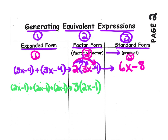We're multiplying 3 against the quantity 2x minus 1. Now we're going to distribute. Let's triple the 2x and triple the loss of 1 by distributing the 3 to each of those terms to come up with a product in standard form. 3 times 2x is 6x, and 3 times negative 1 makes negative 3. This is in standard form — this is known as your product.